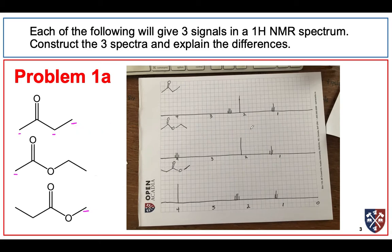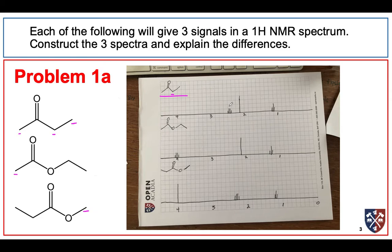But where they appear is different. For the first compound, two-butynone, we expect the isolated methyl group to be a singlet somewhere around 2 ppm. The CH2 group, which is also on an alpha carbon, I expect to be a quartet, also around 2 ppm. Methylene groups come a little bit further upfield than methyl groups, so I've drawn it to the left. Finally, our methyl group, expected to be a triplet, is going to be down around 1 ppm.